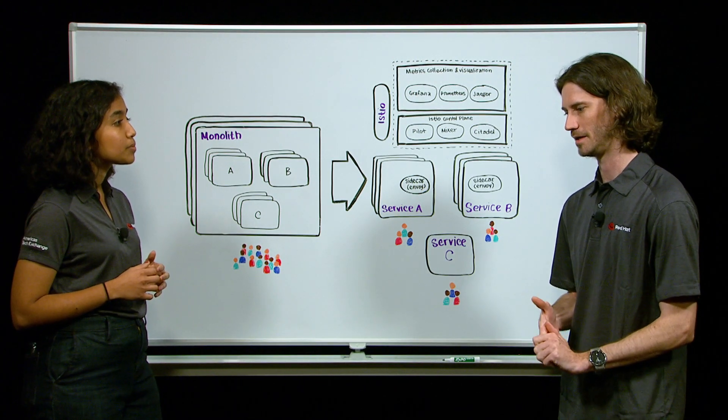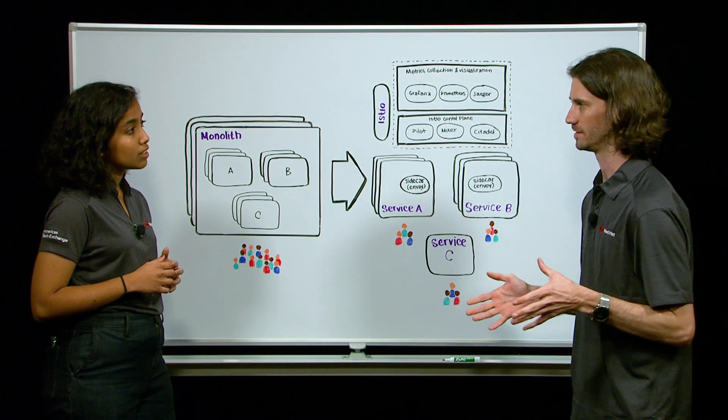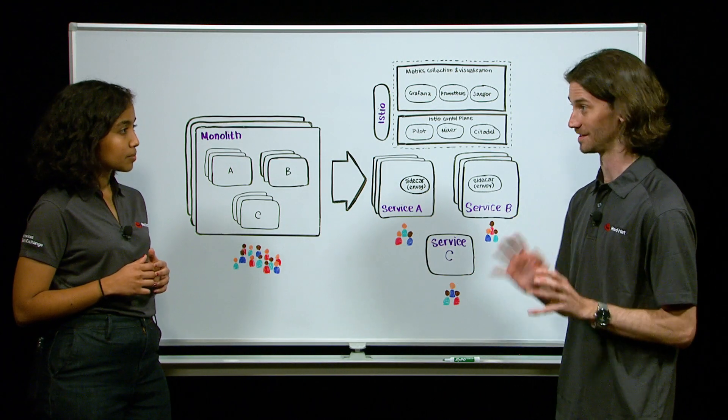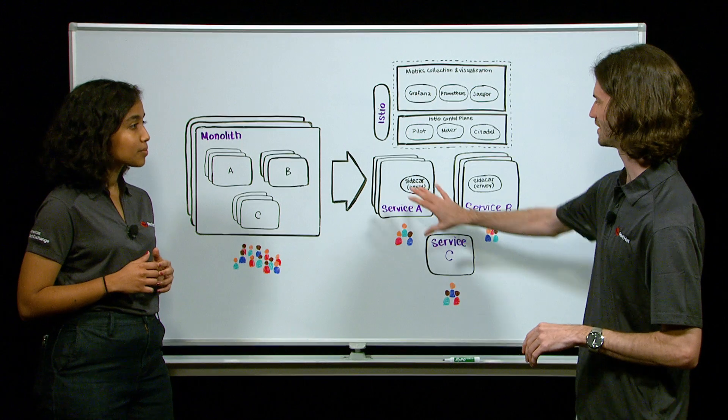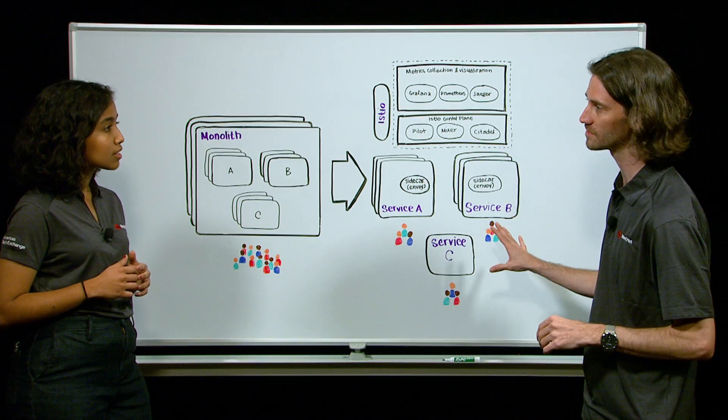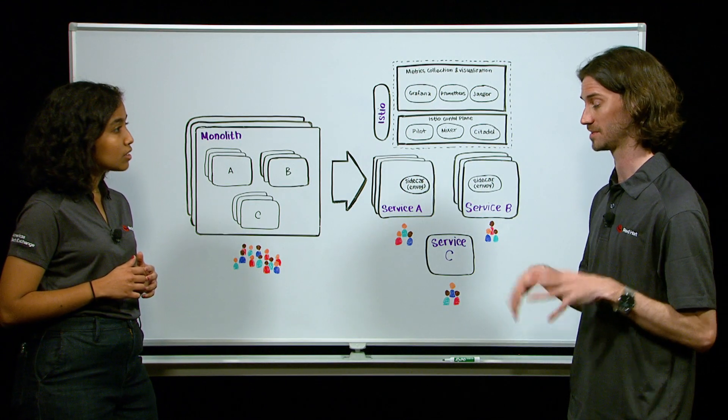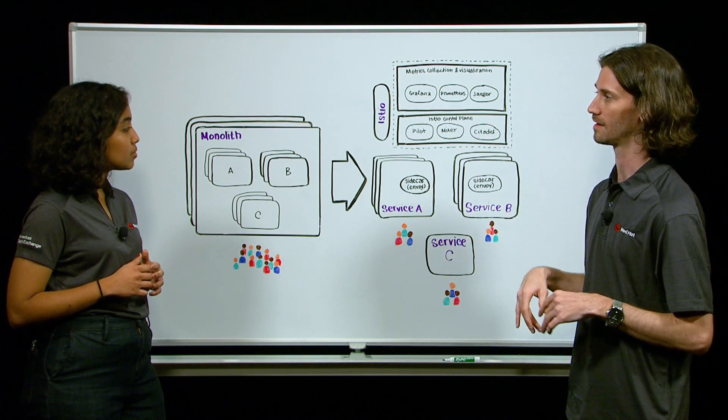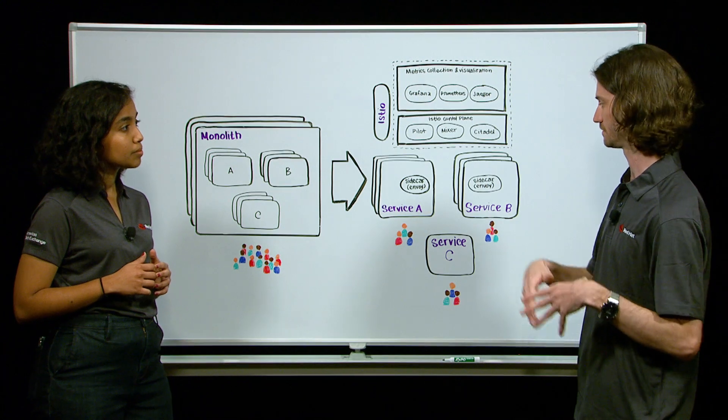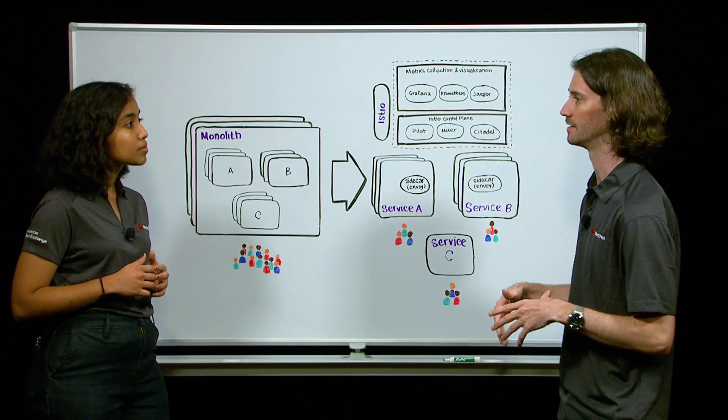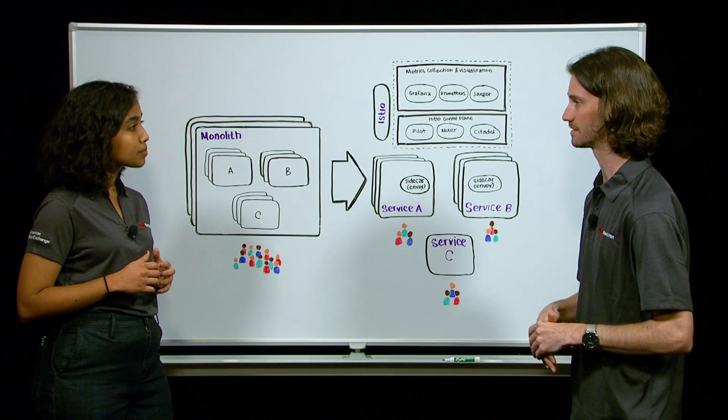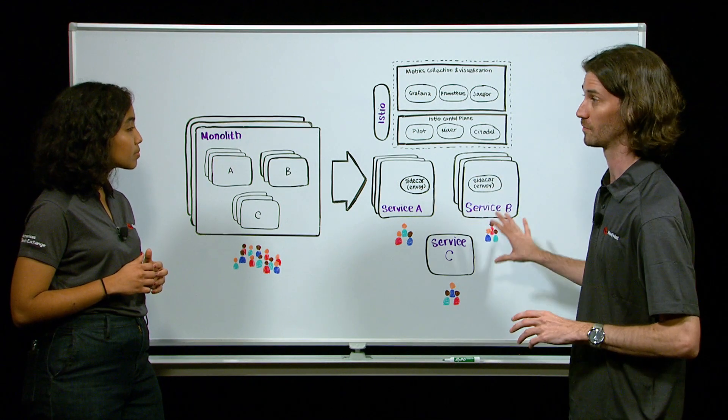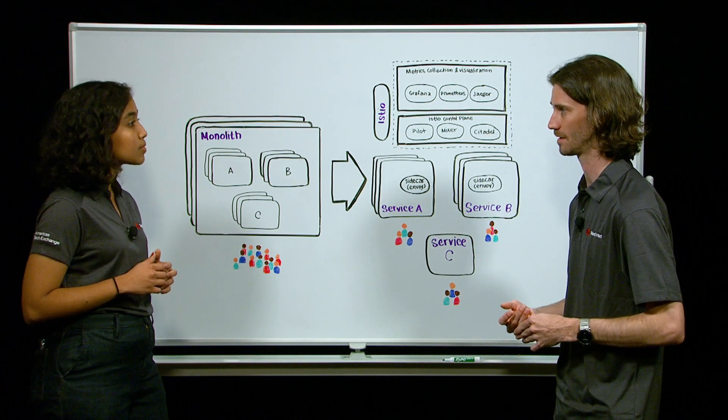Yeah. So I think about observability in general, right? With a monolith, we only had to keep track of one thing. And with microservices, we have to keep track of a bunch of different components. So instrumenting these in a way that exposes metrics and tracing becomes really important, especially when we're highly decomposed.